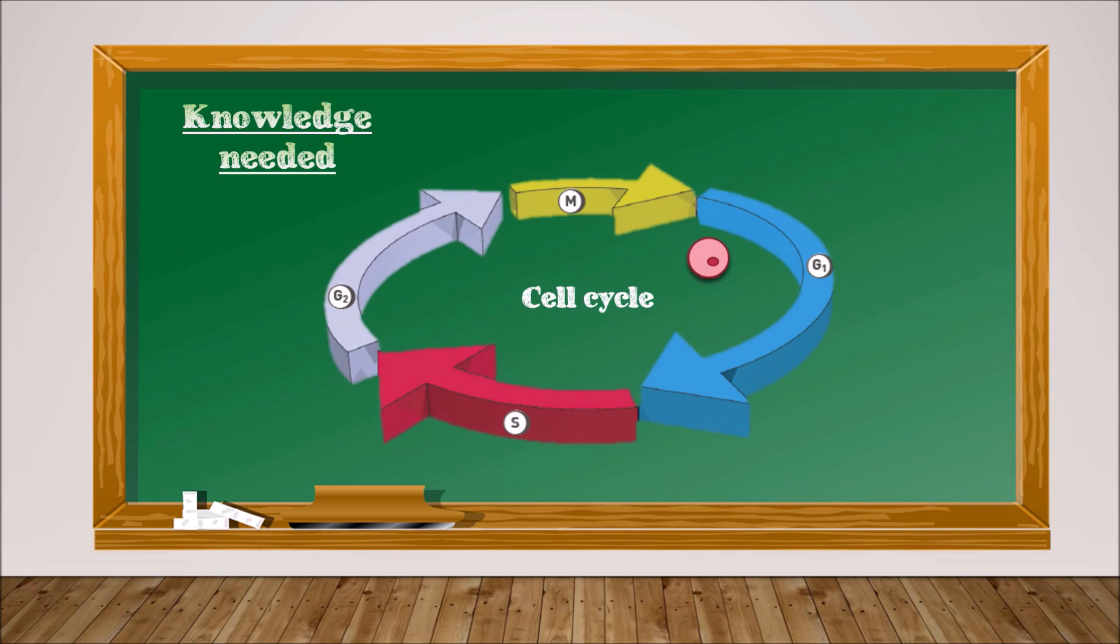It consists of four phases. First of all, G1 phase, then S phase, then G2 phase, and finally the M phase, which is the mitosis phase.